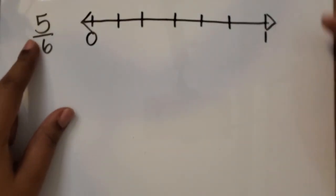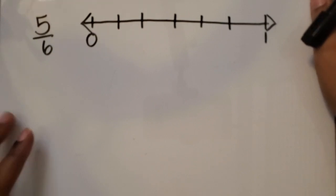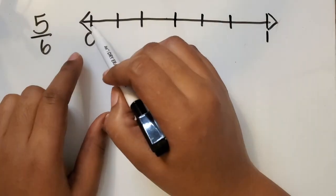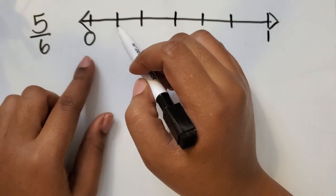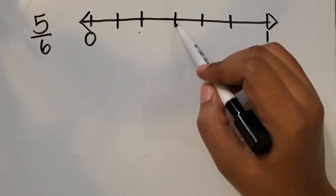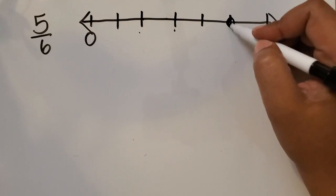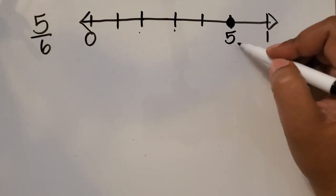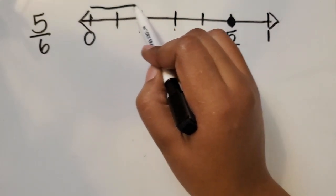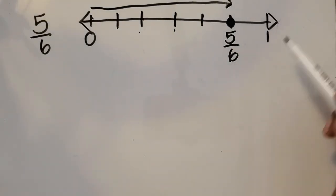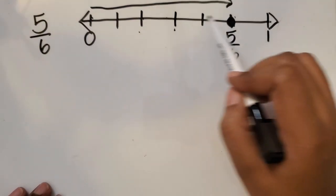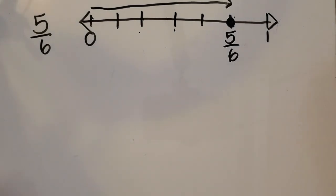So where is five-sixths on the number line? From zero to one whole, we know there are six equal parts. From zero to the first tick mark is one-sixth, the second mark is two-sixths, three-sixths, four-sixths, and here is where five-sixths will be. From zero all the way to this point represents five-sixths — not just this point, but from zero to this point is a length of five-sixths.